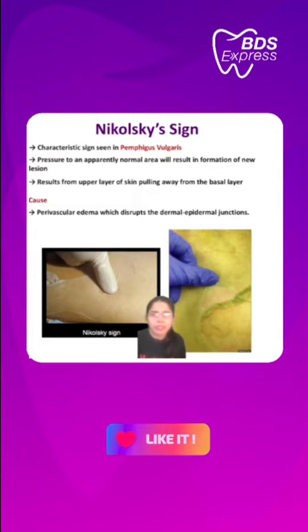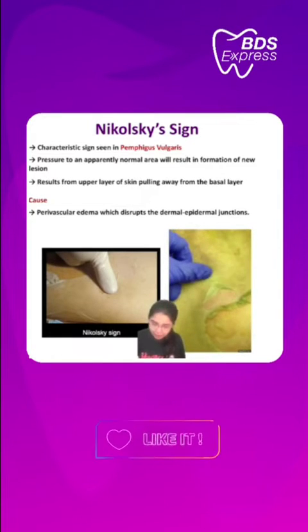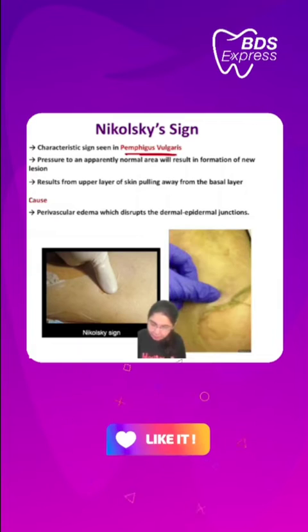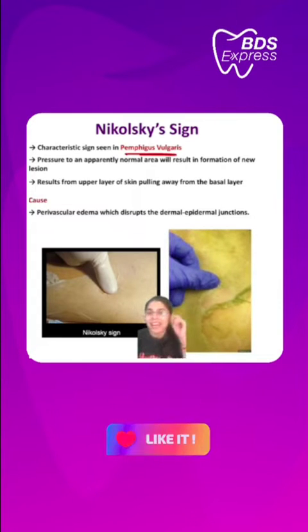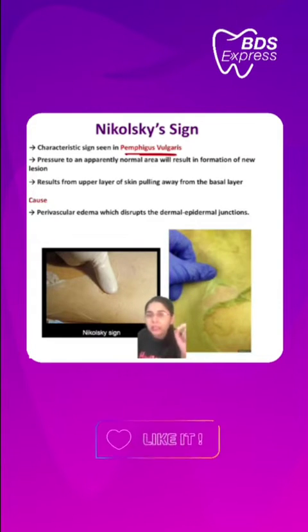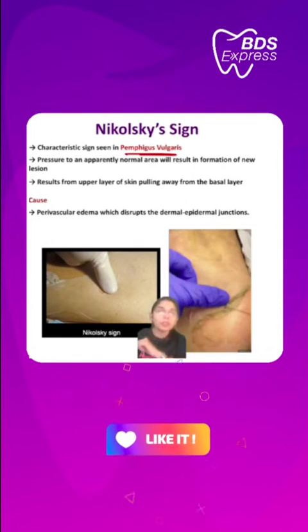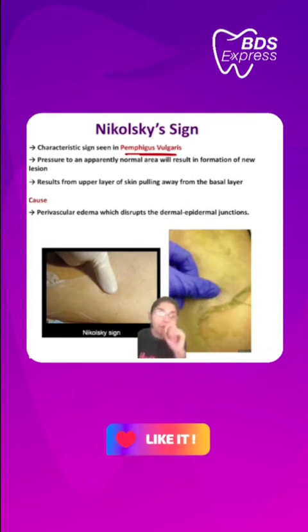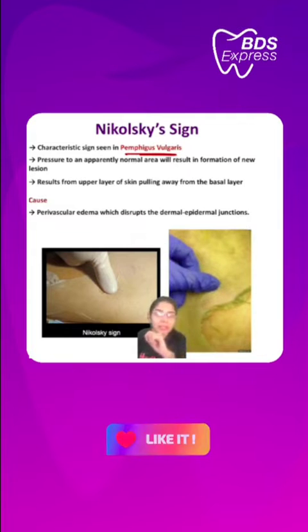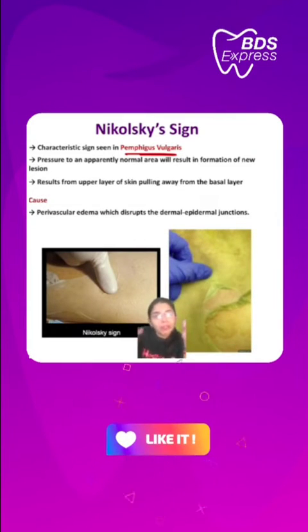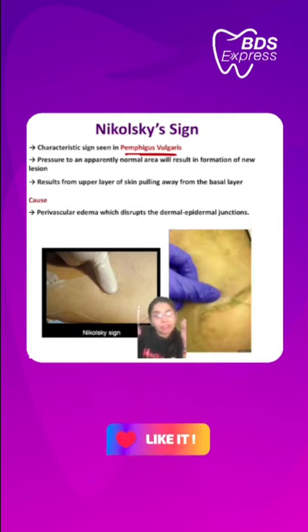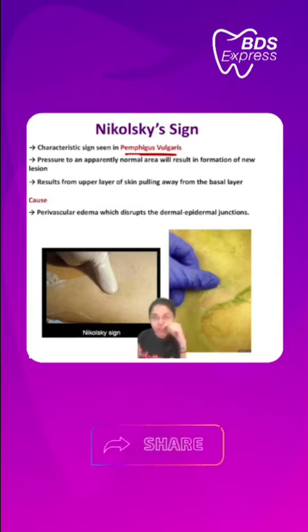So where is the Nikolsky sign seen? It is seen in the pemphigus vulgaris condition, and that is the characteristic sign which you see in this pemphigus vulgaris condition.